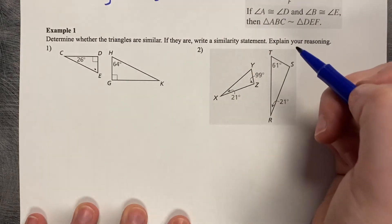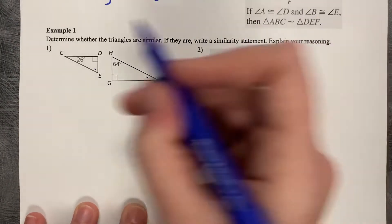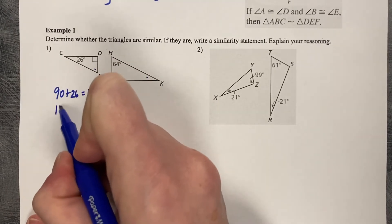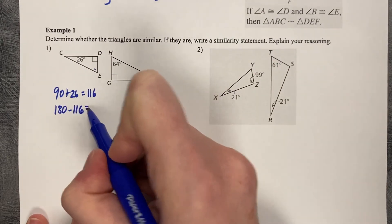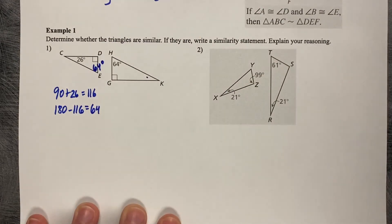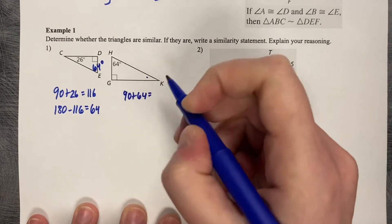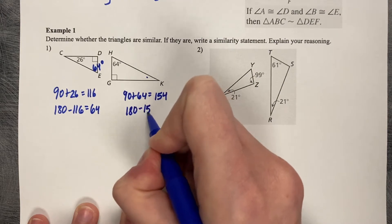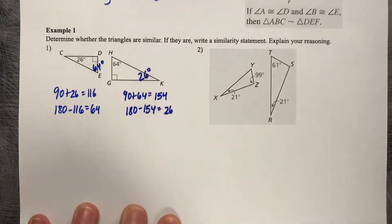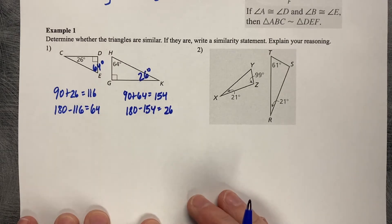Because if those match the opposite triangle, then these are similar. So 90 plus 26 is 116. 180 minus 116, because of the triangle sum theorem, is 64. So that means that angle E is 64 degrees. Now let's go the other way. 90 plus 64 is 154. 180 minus 154 is 26. Yay! So that means that angle K is 26 degrees. So do these two triangles have three angles that are congruent? Yes!